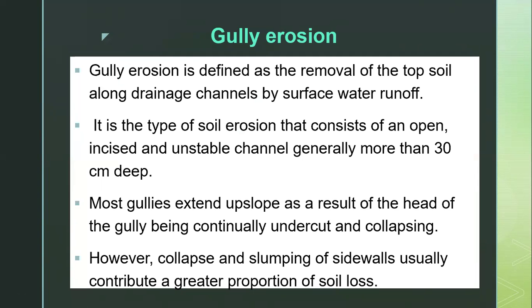Moving on to gully erosion. Gully erosion is defined as the removal of topsoil along drainage channels by surface water runoff. It is a developed form of rill erosion — a type of soil erosion that consists of an open, increasing in size and unstable channel, generally more than 30 centimeters deep. It extends upslope as a result of the head of the gully being continually undercut and collapsing.